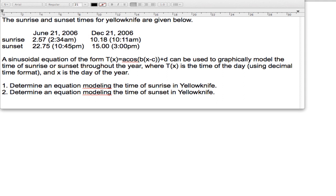Okay, here's a trigonometry application question. It says the sunrise and sunset times for Yellowknife are given below. Sunrise: June 21st, 2:34 a.m. and December 21st, 10:11 a.m. For sunset: June 21st, 10:45 p.m. and December 21st, 3:00 p.m.